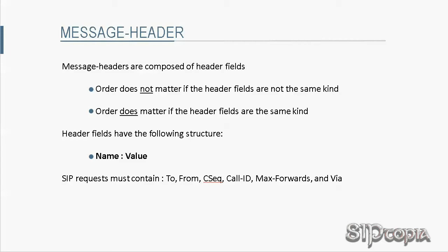The message header is composed of header fields. An important point is that the order of header fields does not matter if the header fields are not the same kind. However, if the header fields to be listed are the same kind, the order is crucial. Header fields have the following structure: name, colon, value. All SIP requests must contain at least each of the following headers.